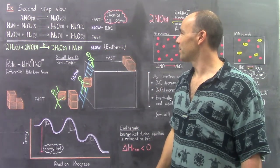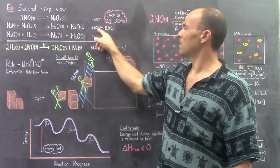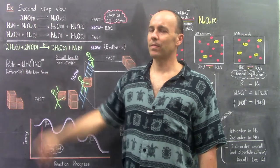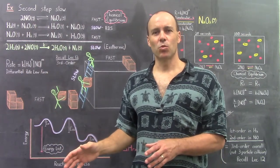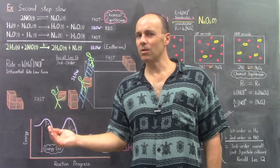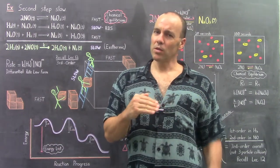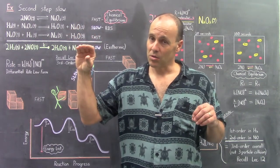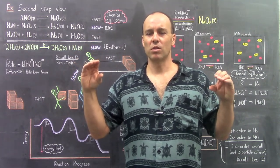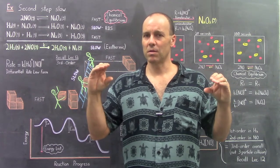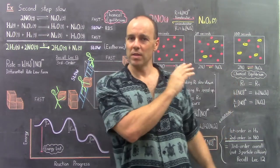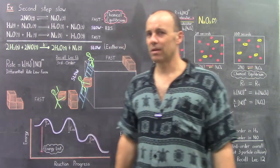Since the first step is faster than the second step, it reaches a point of chemical equilibrium, represented by a two-way arrow. Chemical equilibrium is like the finishing point for a reaction — once a certain amount of reactant has reacted and a certain amount of product has been generated, the concentrations no longer change. That's called chemical equilibrium. We'll examine equilibrium in just a few moments, but first a few more things regarding this reaction mechanism.